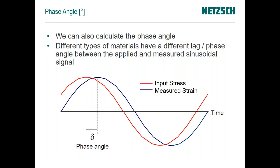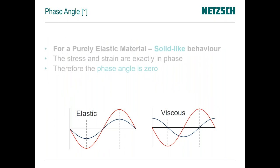Phase angle is a new component we're going to discuss. It represents whatever lag is associated with applying a force to the material — we apply a strain and see the resultant movement from the sample, and different types of materials have different lags. The difference in how the load responds relates to the viscoelastic properties in the material.